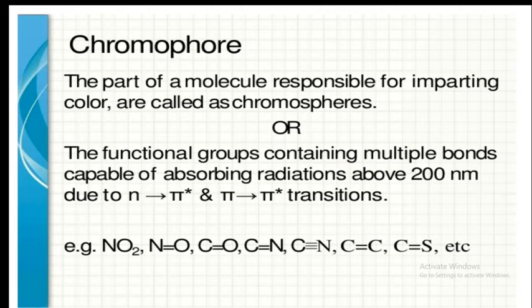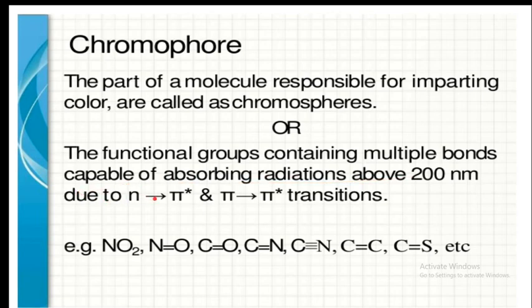Now let me discuss what is meant by a chromophore. The part of a molecule responsible for imparting color is called a chromophore. More precisely, functional groups containing multiple bonds capable of absorbing radiation above 200 nanometers due to n to pi-star transitions and pi to pi-star transitions are called chromophores.